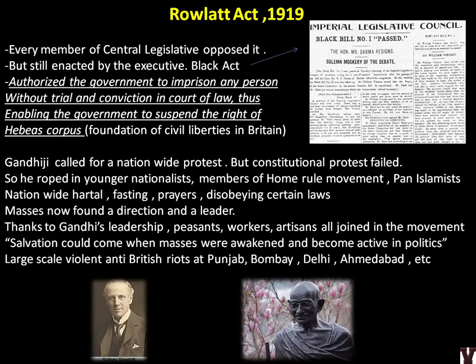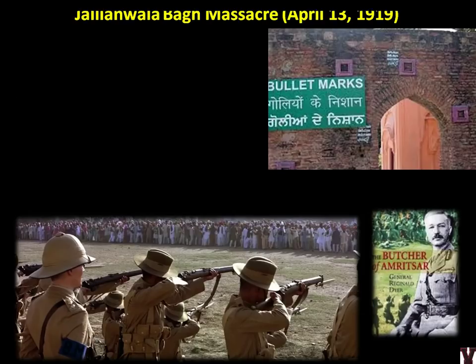Large-scale violent anti-British riots happened across India, but Gandhi never opted for violent methods — he always stayed non-violent. One important follow-up event was the Jallianwala Bagh Massacre — a very sad event in Indian history. General Dyer, who gave the order to fire at innocents, is known as the 'Butcher of Amritsar.' Bullet marks from that day are still present at Jallianwala Bagh — if you have a chance, please visit. After the Rowlatt Act, people could be arrested without trial.